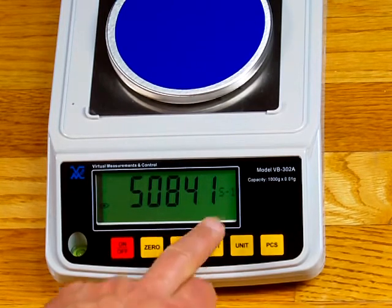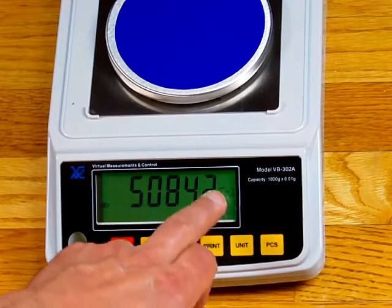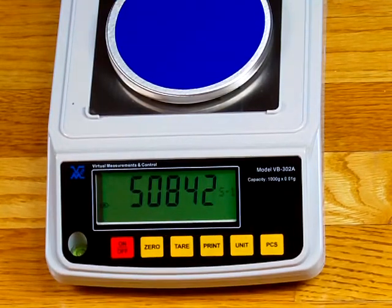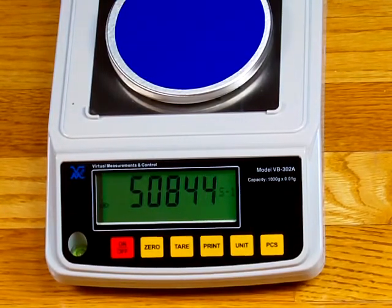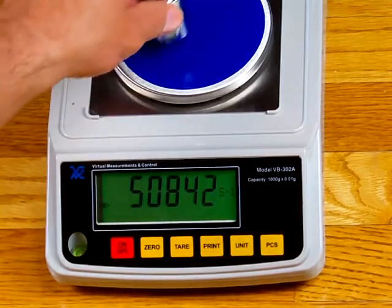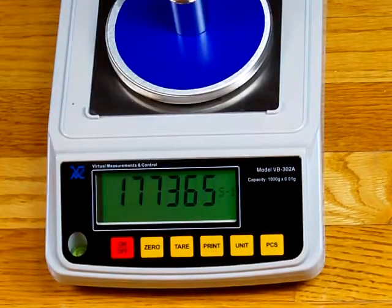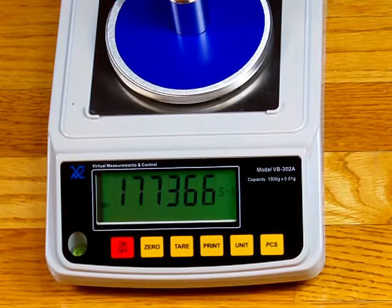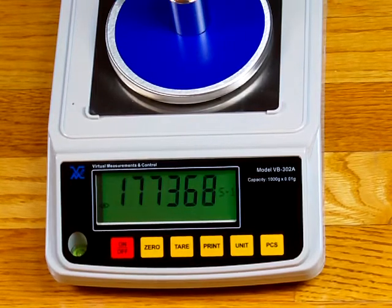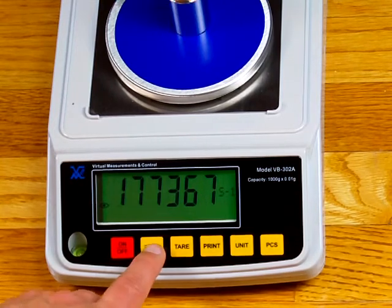And you'll notice now on the right-hand side, it says S-1. So it's looking for the first 200-gram weight. So I'll place the 200-gram weight on here. And again, these are random numbers coming out of the A to D converter. And once I have stability over here, I'm going to press the 0 key again.